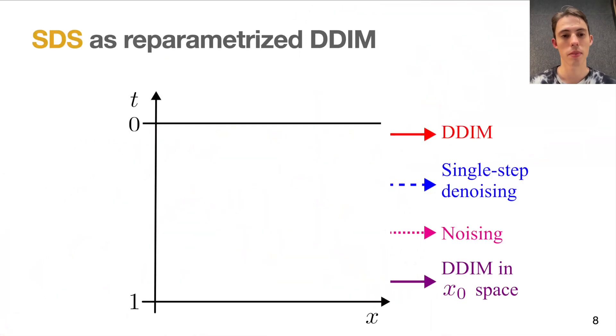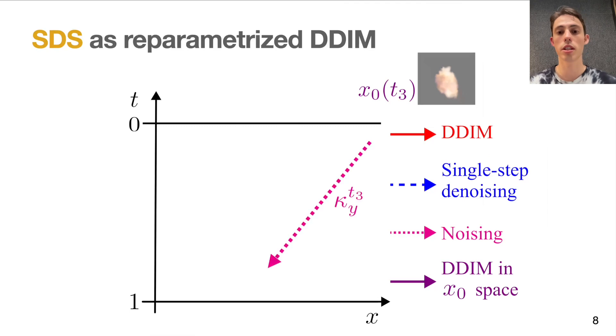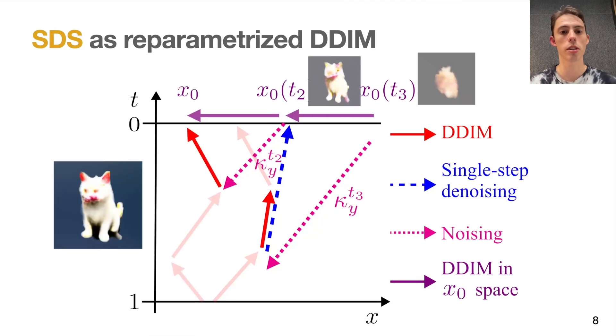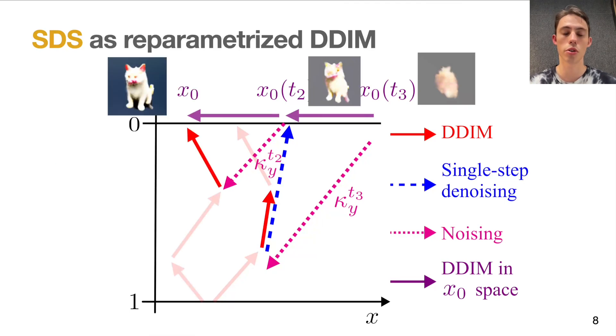But what does it mean in practice? By sampling kappa randomly, on each update step, we assign our update rule to a different DDIM trajectory. This leads to averaging the results across multiple trajectories and thus blurriness of the results.